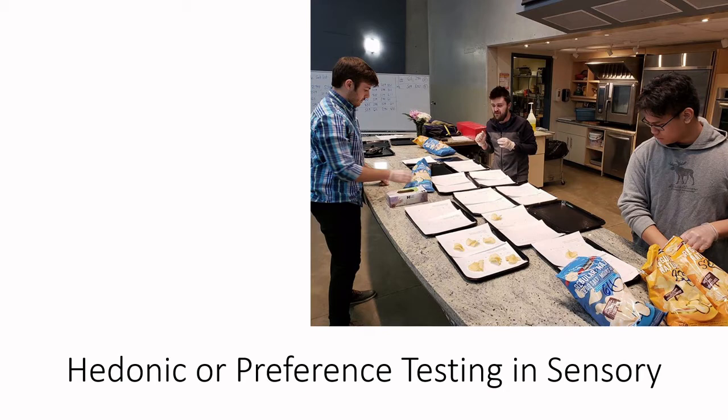So much of sensory analysis that we've spent up to this point has been focused on the technical attributes of the food product. We did talk about focus groups and thinking about some of the attitudes and behaviors surrounding food. Now we're really delving into how much people like a food product, and that is such a critical question for food scientists when developing a new product.